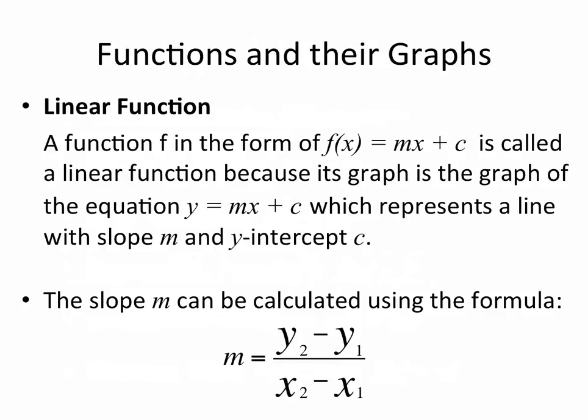The first one is linear function. A function f in the form of f(x) = mx + c is called a linear function because its graph is the graph of the equation y = mx + c, which represents a straight line with slope or gradient m and the y-intercept is the value of c.